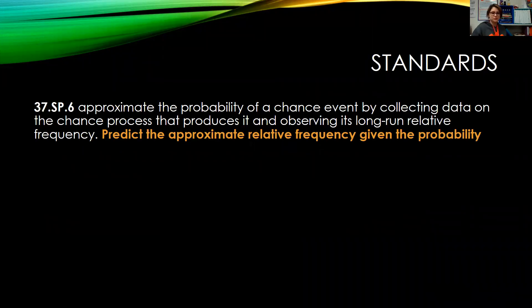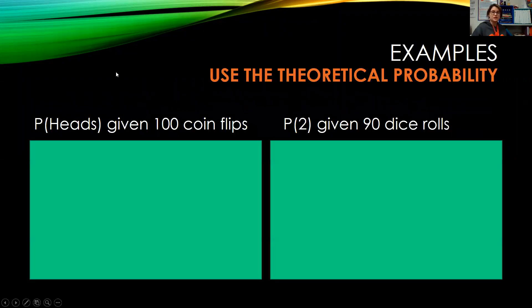We'll be looking at standard 37 SP6, specifically focusing on predict the approximate relative frequency given the probability. So let's just jump right in with our examples.